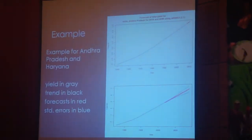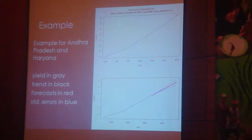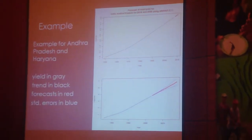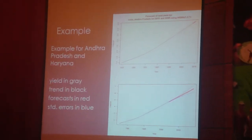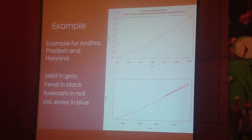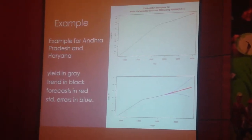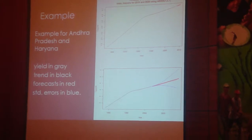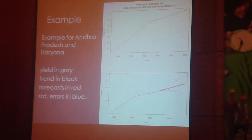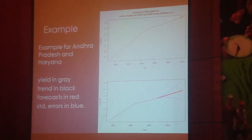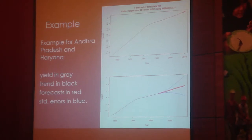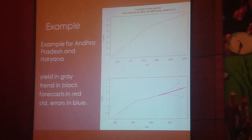To give you an idea of what this looks like, here's an example from Andhra Pradesh over 50 years. The grey line shows the actual yield reported in the statistics from year to year, the black line shows our smoothed trend, and then we have the extrapolation in the future in red with standard errors in blue. Another example from Haryana shows a very different pattern in the historical time series, and the influence that change has on projections into the future means the standard errors become much wider, because we've observed historical changes in the trend and have less confidence in projecting what that trend might be in the future.